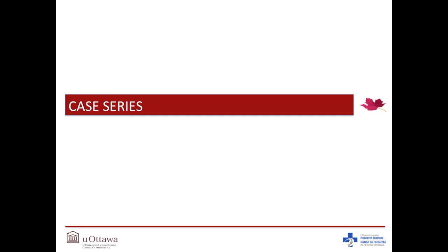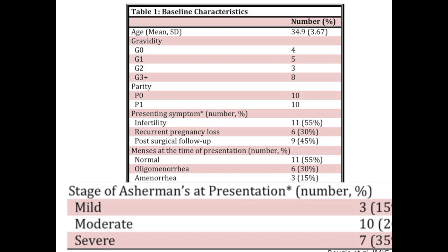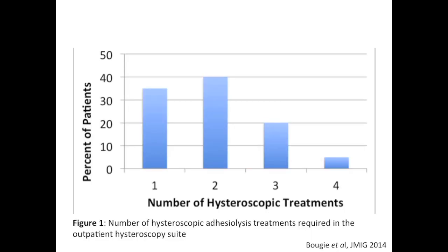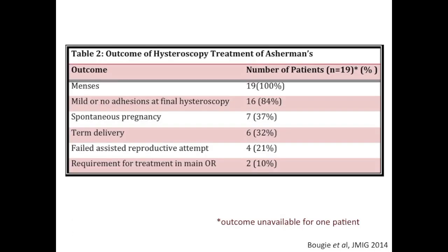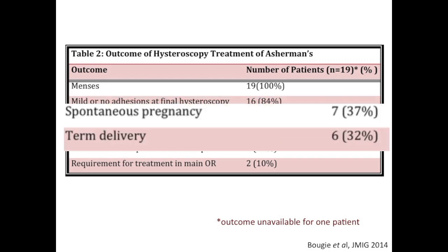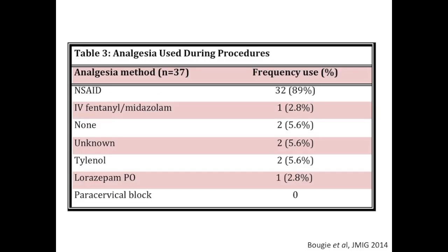We would like to share our results of outpatient hysteroscopic adhesiolysis at the Ottawa Hospital. We performed a retrospective case series looking at 20 Asherman patients. Fifteen percent had mild adhesions, 50% moderate, and 35% severe according to March classification. In 35% of patients, previous hysteroscopic adhesiolysis had been attempted. Most patients required one or two procedures. Outcomes were available for 19 patients; all experienced normal menses following treatment. Seven patients achieved a spontaneous pregnancy and six have gone on to deliver to date. Two patients required hysteroscopic adhesiolysis performed in the main operating room to concurrently treat a submucosal fibroid. The most common form of analgesia, used in 89% of cases, was non-steroidal anti-inflammatories.